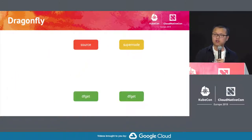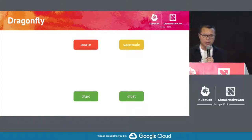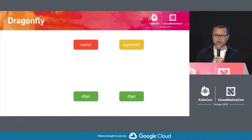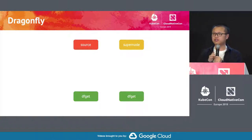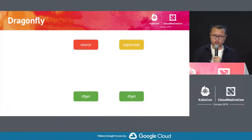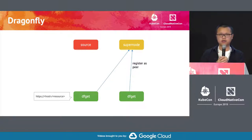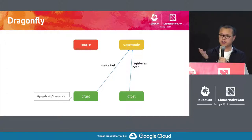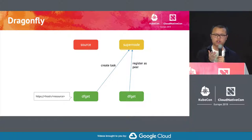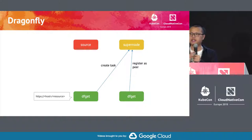Let's take a look at how Dragonfly works in the P2P case. Primarily, Dragonfly consists of two components. One is the super node. Another one is the client — basically, that's the dfget. During the initialization phase, every client needs to register that peer to the super node. And suddenly, one of the nodes gets a request, saying: I want to download the file. So it sends a request to the super node: now I want to create a task. What the super node does is create a record in its memory and give you a task ID.